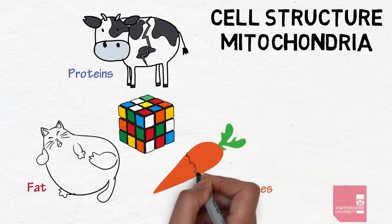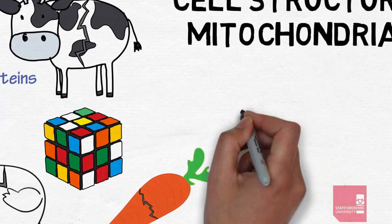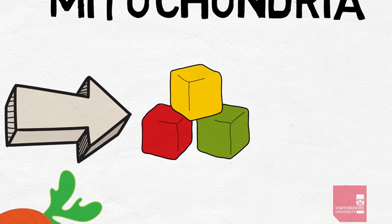Within the digestive tract, the body breaks these groups down into smaller building blocks which are then absorbed and transported to cells where they can be used.